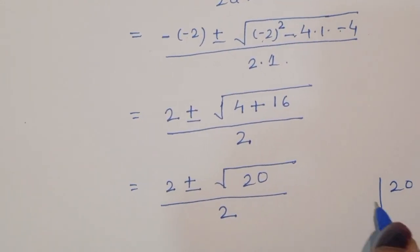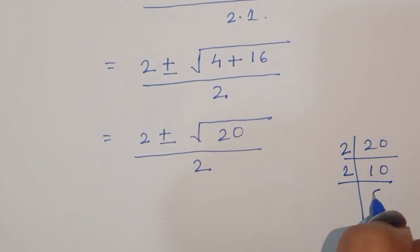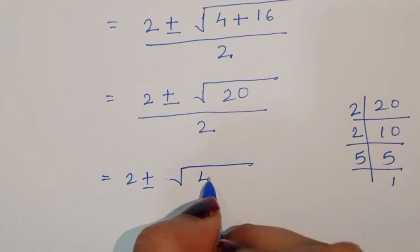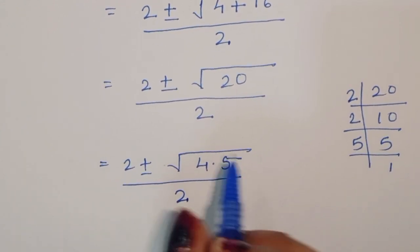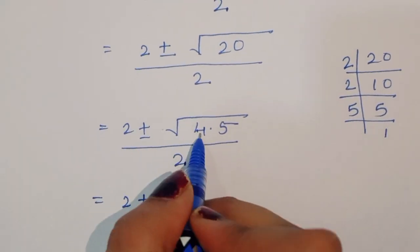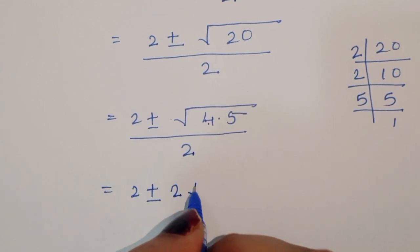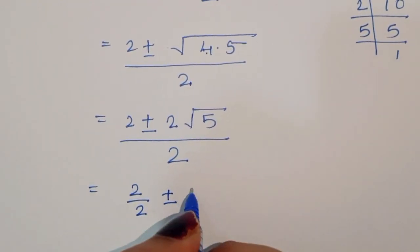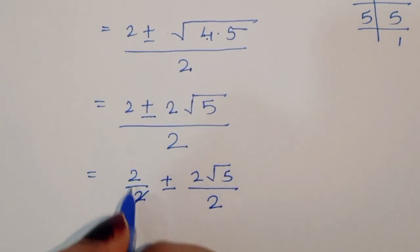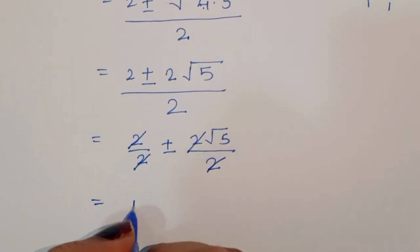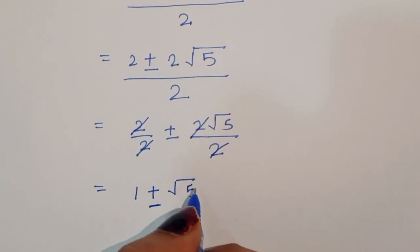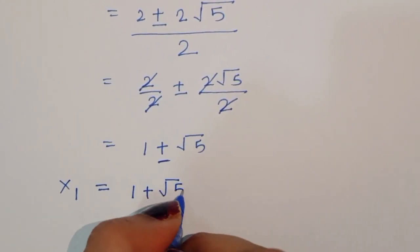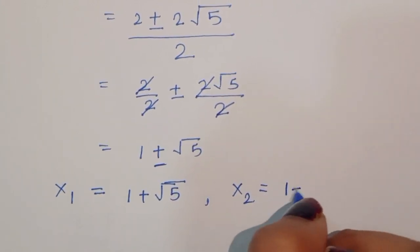Now factoring 20: 20 is 4 times 5. So the square root of 20 is 2 square root of 5. We get 2 plus or minus 2 square root of 5, divided by 2. Simplifying, this becomes 1 plus or minus square root of 5. So x1 is equal to 1 plus square root of 5, and x2 is equal to 1 minus square root of 5.